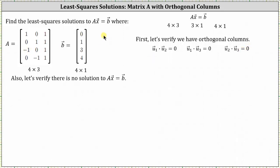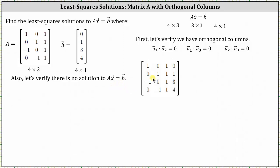Let's also verify there is no solution to matrix A times vector x equals vector B. Let's first write the augmented matrix, where the first row is (1, 0, 1 | 0), the second row is (0, 1, 1 | 1), the third row is (−1, 0, 1 | 3), and the fourth row is (0, −1, 1 | 4).